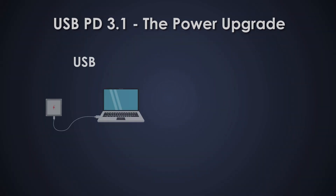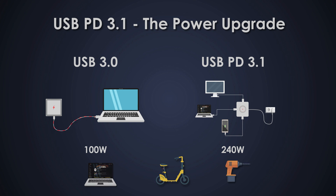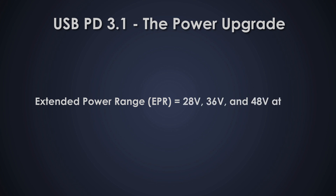USB PD 3.0 could already deliver up to 100 watts, but USB PD 3.1 pushes that to 240 watts, opening up new possibilities like high-performance laptops, e-bikes, and even power tools. This power leap is thanks to the Extended Power Range, which introduces voltage levels of 28 volts, 36 volts, and 48 volts, providing 5 amperes of current.